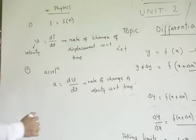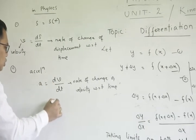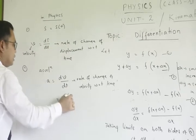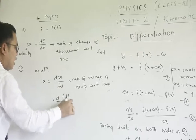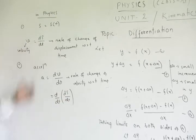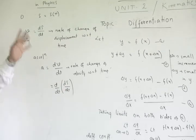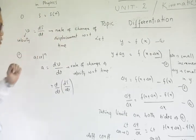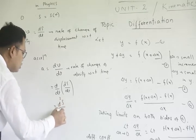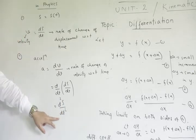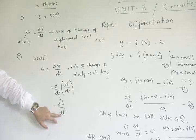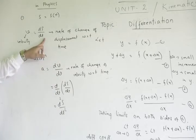In physics, the displacement gives d²s by dt². The derivative of velocity with respect to time gives acceleration. This is called the second order derivative, and ds/dt is called the first order derivative.